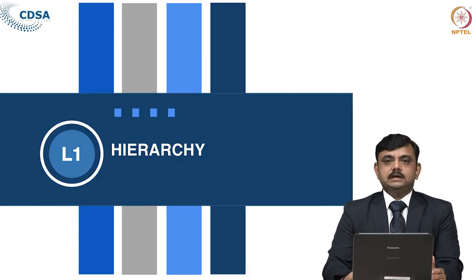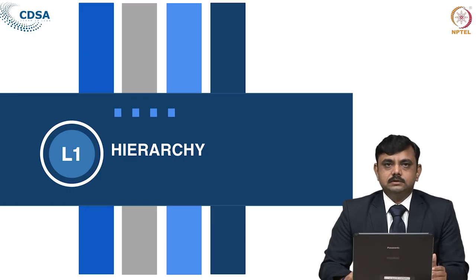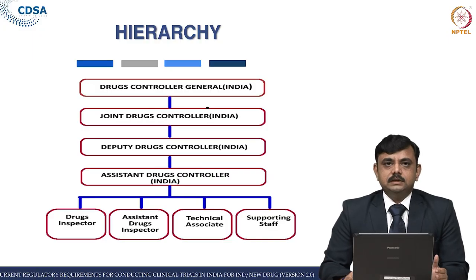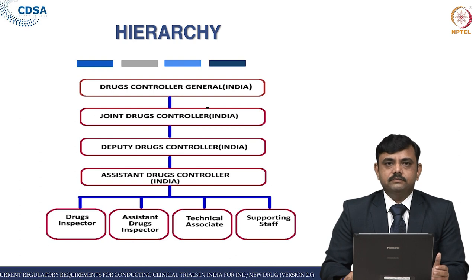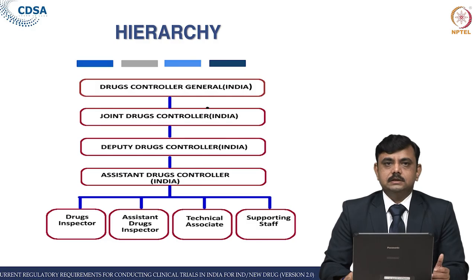Let us see the hierarchy at the CDSCO headquarter in New Delhi. CDSCO is headed by the Drug Controller General of India, also called DCGI or the central licensing authority. He is supported by Joint Drug Controller of India, Deputy Drug Controller of India, Assistant Drug Controller of India, and Drug Inspectors who are responsible for conducting inspections and audits of clinical trial sites. They are further supported by Assistant Drug Inspectors, Technical Data Associates and other supporting staff.